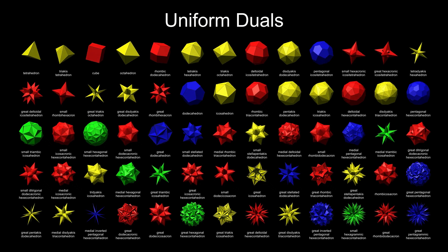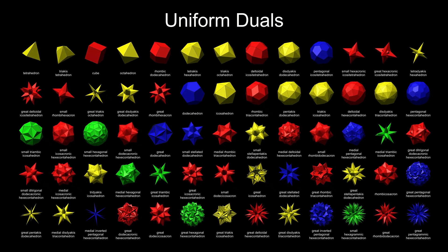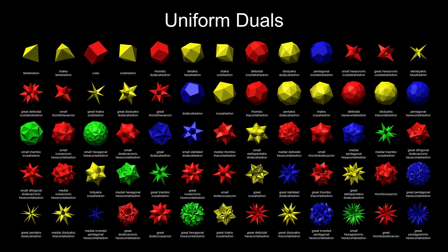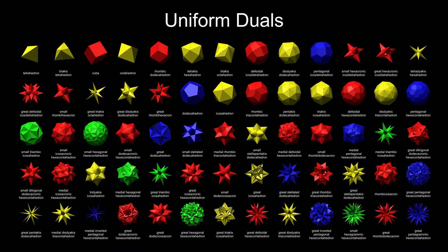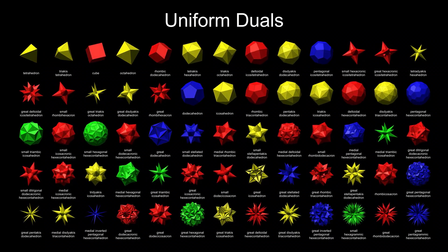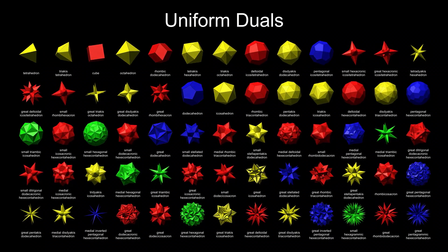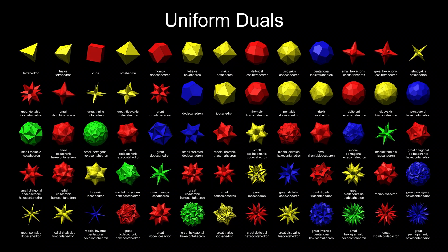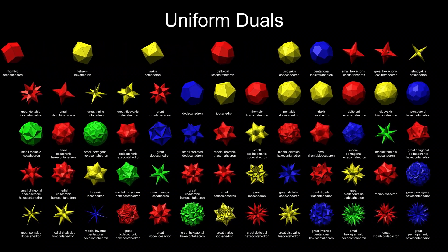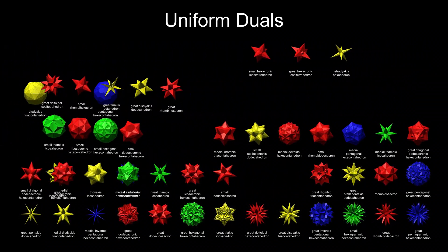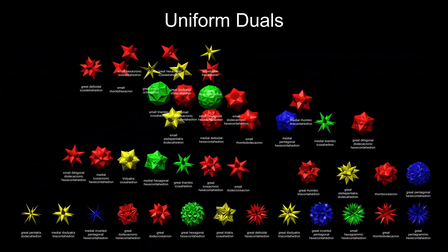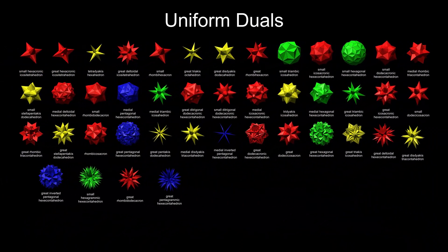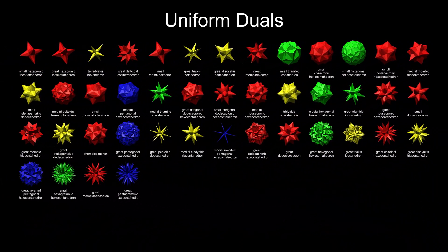This video will look at the duals of the uniform polyhedra. We have in fact already seen many of these: the bipyramids, trapezohedra and Catalan solids, as well as the regular polyhedra which are dual to each other. That leaves these fascinating duals of concave uniform polyhedra to explore.